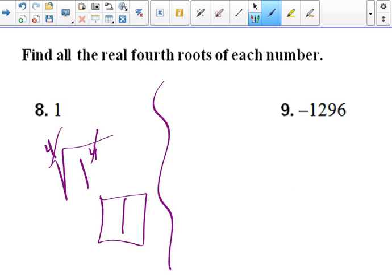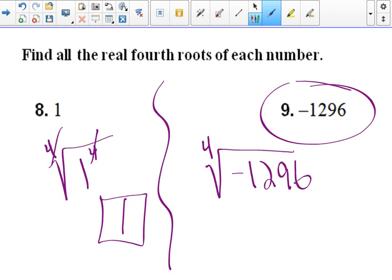Now, over here, you look at negative 1296. Well, they want to know what is the real fourth root of a negative number. Well, because this is an even power, when you multiply something together four times with an even power, you're going to get a positive.